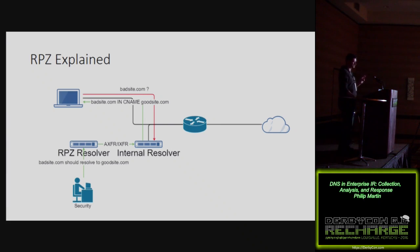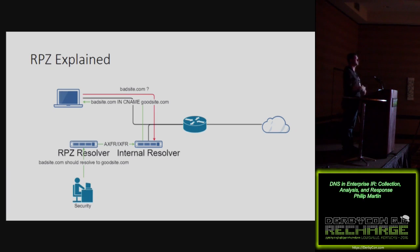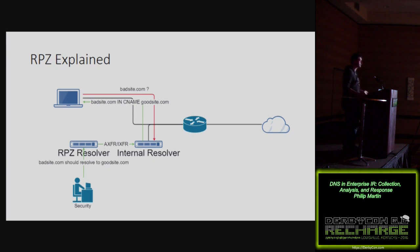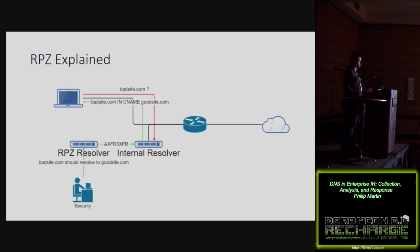For deployment, if you have more than one resolver, your internal recursive resolvers can slave a zone off of a DNS server you control. This is great when you don't own the DNS infrastructure. All you're doing is saying: slave this zone and add one line of config to your named.conf. Even if my server burns to the ground, the worst that happens is traffic doesn't get blocked — it doesn't impact the operational stability of DNS.